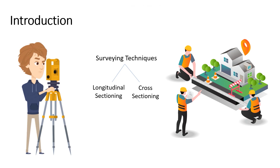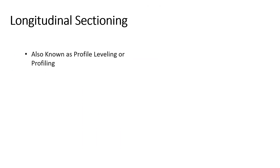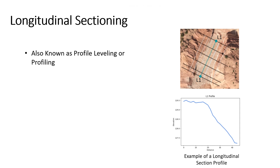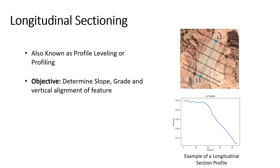The first technique is longitudinal sectioning. Longitudinal sectioning, also known as profile leveling or profiling, is the process of establishing the elevation of sites on the ground at regular intervals along a continuous line. Profile leveling is one of the surveyor's most typical applications of running levels and vertical distance measuring. The data are represented as a profile, which is a representation of a vertical cross-section. The primary objective is to determine the slope, grade, and vertical alignment of the surveyed feature.